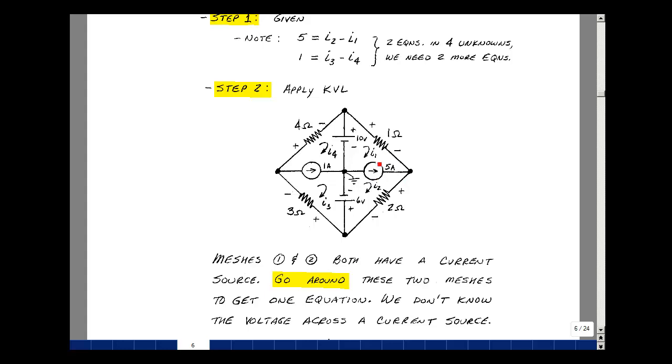If I go around this mesh, I have a current source in the mesh, and I don't know the voltage across the current source. It just becomes another unknown. No Ohm's Law kind of relationship. What I could do is not include that in my going around the mesh. I'll go around the outer mesh here where I just have resistors and voltage sources.